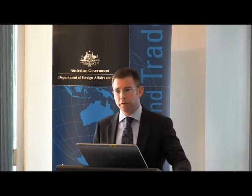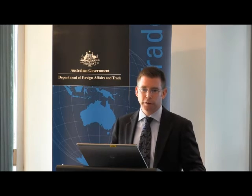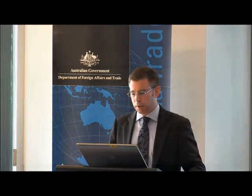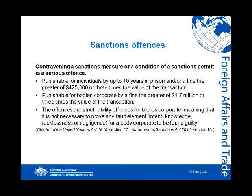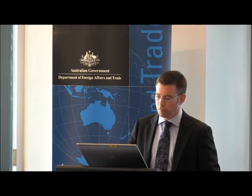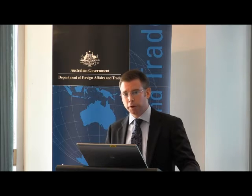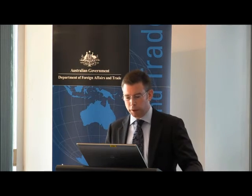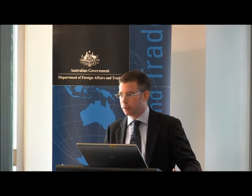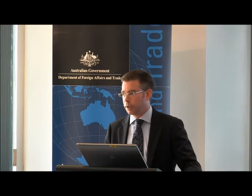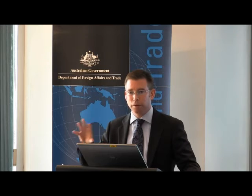Turning to the fourth part — the serious criminal offences established by Australian sanction laws. Contravening a sanctions measure or a condition of a sanctions permit is a serious criminal offence, punishable for individuals by up to 10 years in prison and/or a fine of the greater of $425,000 or three times the value of the transaction. For bodies corporate, the fine is the greater of $1.7 million or three times the value of the transaction. Importantly, these offences are strict liability offences for bodies corporate — it is not necessary to prove any fault element such as intent, knowledge, recklessness or negligence for a body corporate to be found guilty.